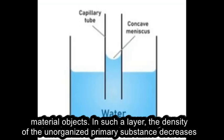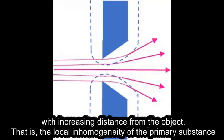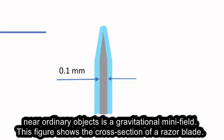In such a layer, the density of the unorganized primary substance decreases with increasing distance from the object. That is, the local inhomogeneity of the primary substance near ordinary objects is a gravitational mini-field.